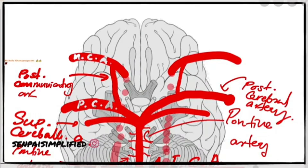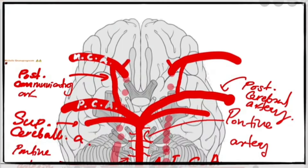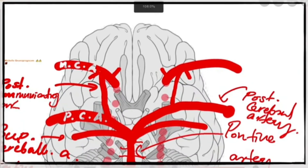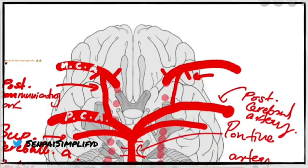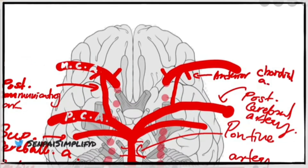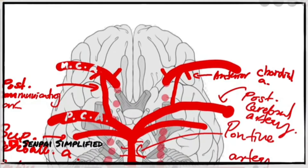Before the internal carotid artery gives off these branches, it gives another branch from inside called the ophthalmic artery, which as the name suggests supplies your eyes. Right after giving the posterior communicating artery, it gives off a branch on either side called the anterior choroidal artery, which supplies a bunch of deep structures within the brain.